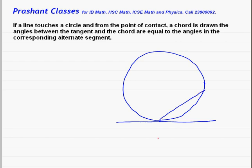So from this point of contact, let the point of contact be A. PQ is a tangent and AB is a chord.